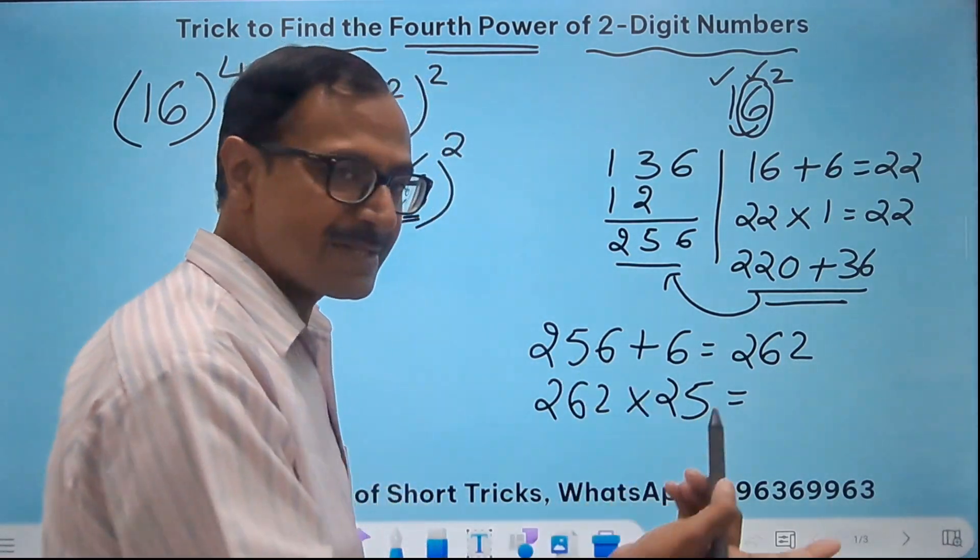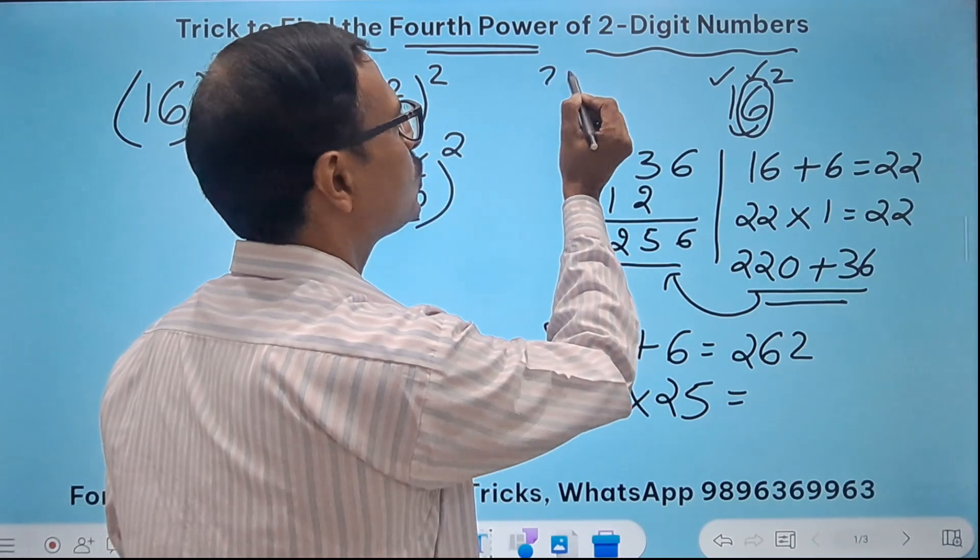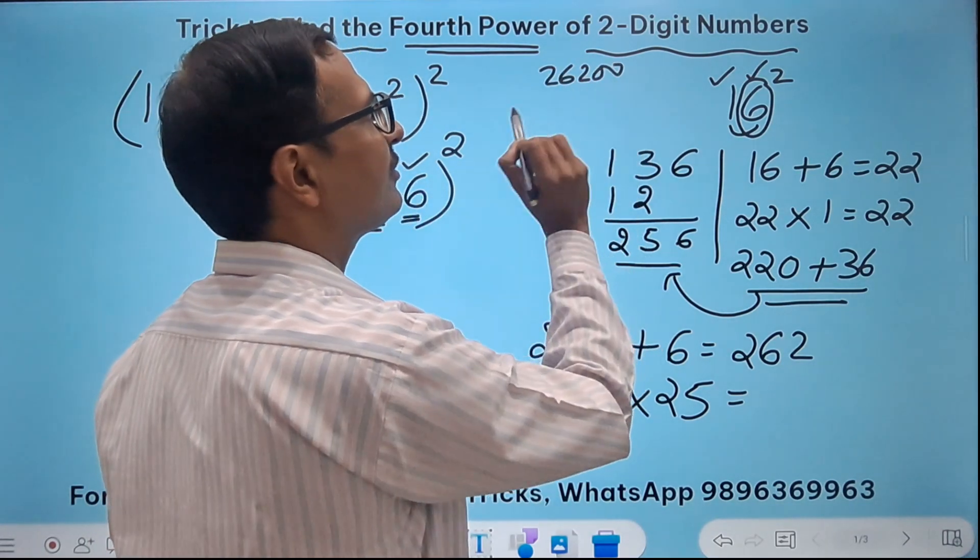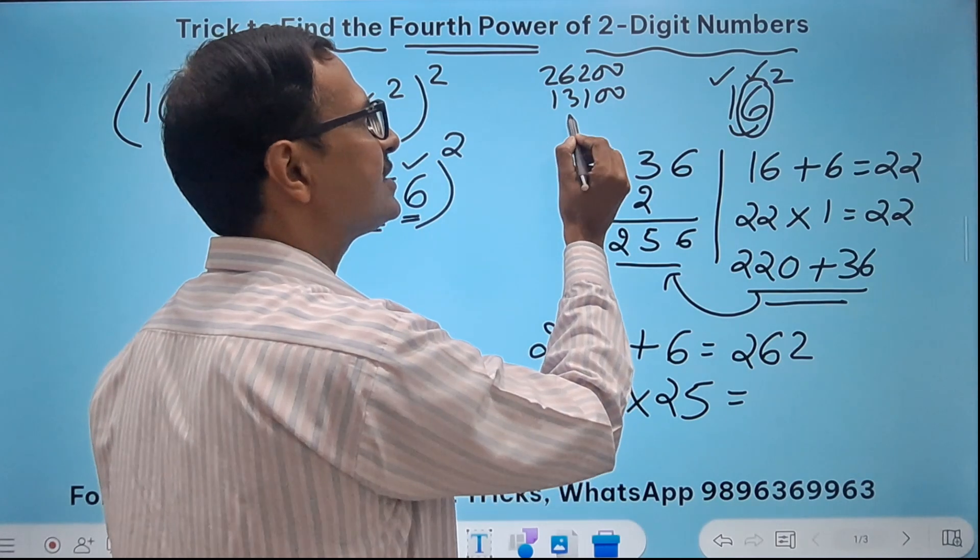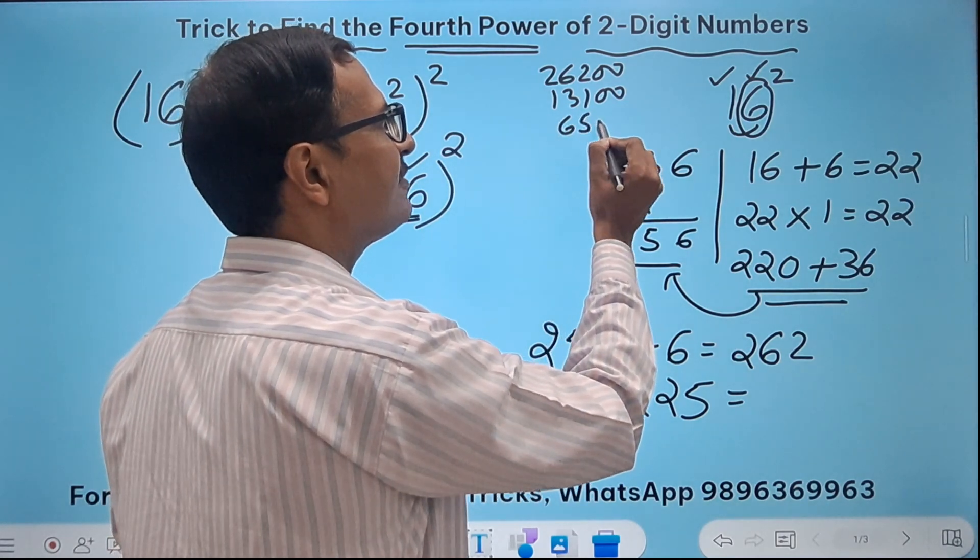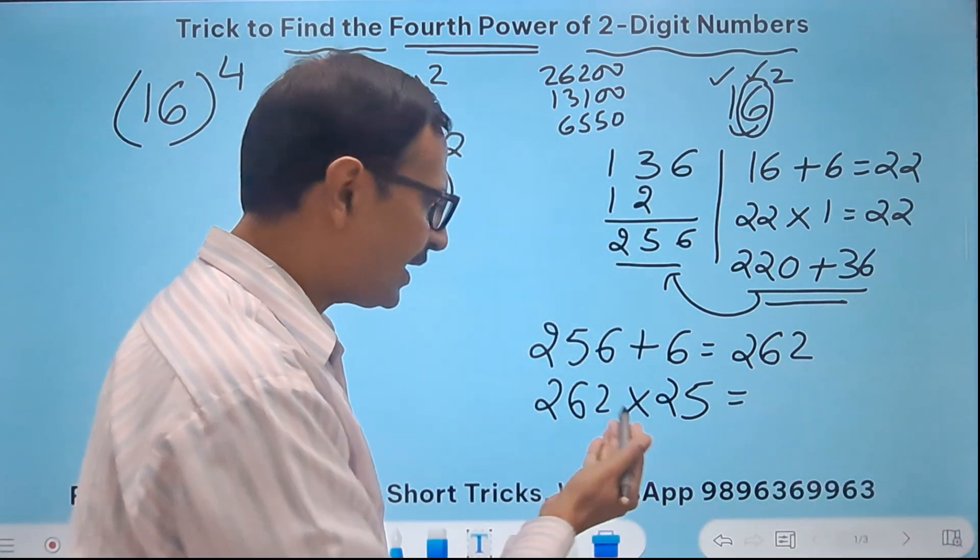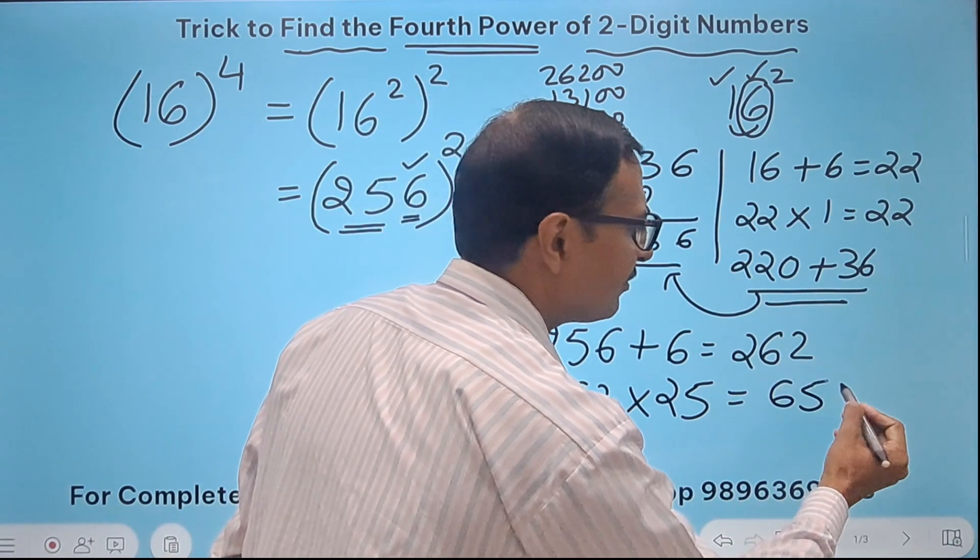So 26200. If I take 26200, half of this is 13100 and half of this is 6550. And that is the product 6550.